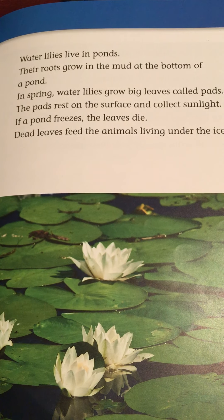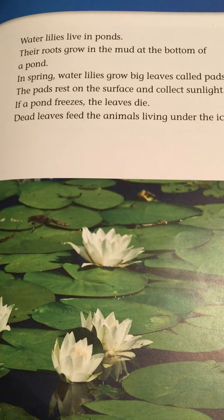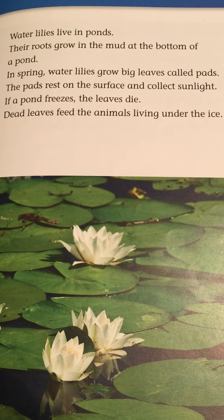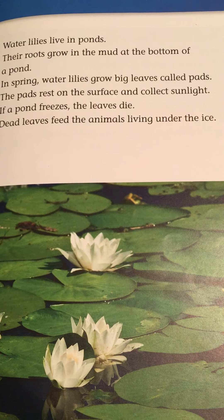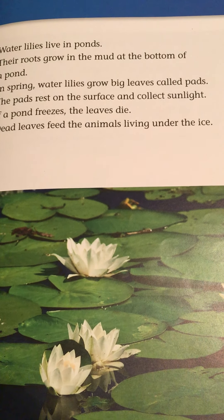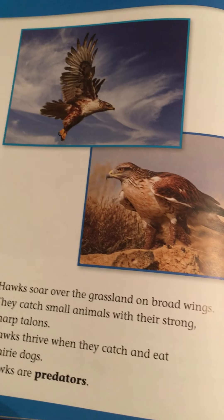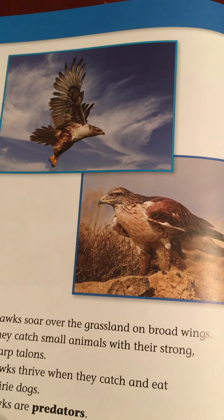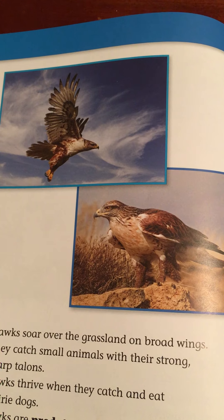So what structures help plants grow in certain places? Their roots and their leaves. What structures help animals survive in certain places? Their legs, their claws, fur, eyes, and wings.